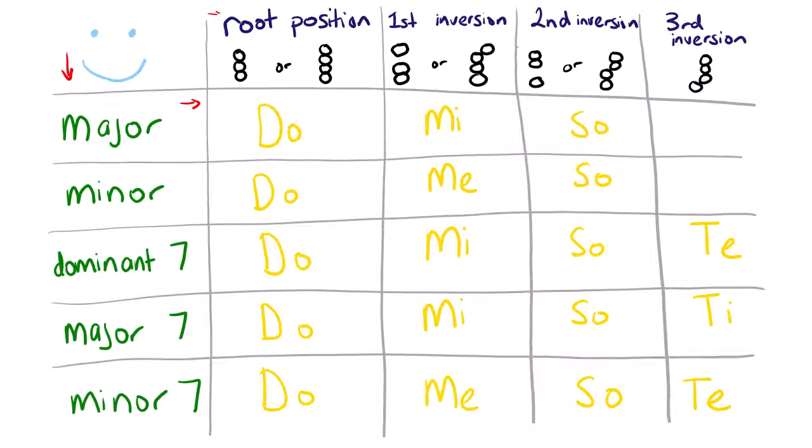Up here it tells you which note is on the bottom depending on what inversion it is, and here you can see what the note looks like or what the chord looks like vaguely when you see it on music notation.